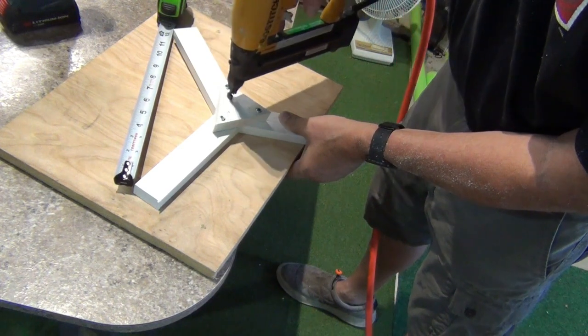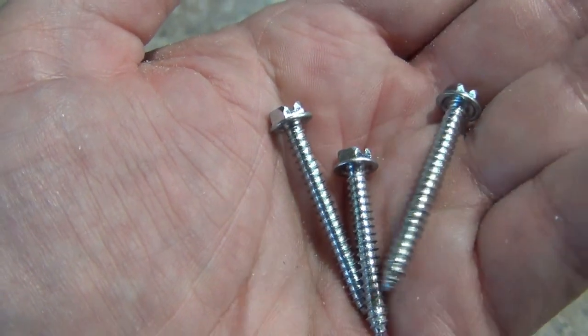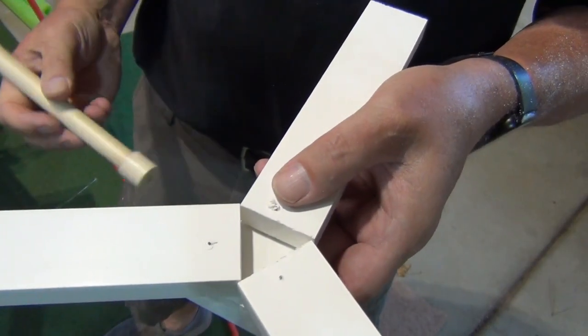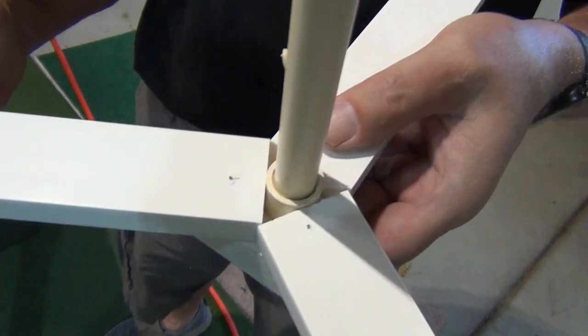To hold everything in place, I'm using an air nailer and brads, but you can use another three of the one inch screws instead. If you did this correctly, the one half inch cap PVC pipe will just fit snugly in the mounting pocket.